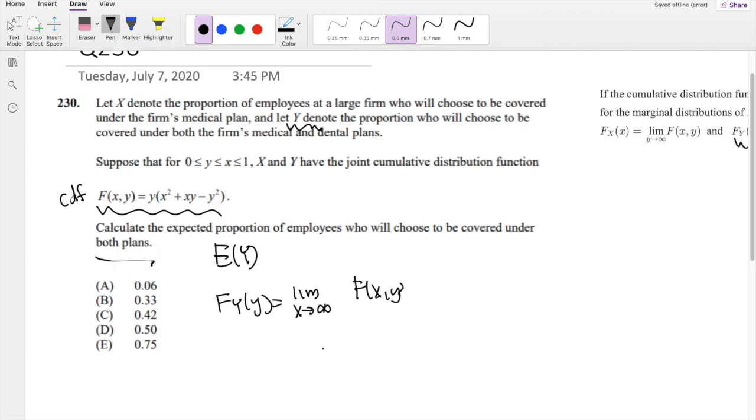So the limit, what does X approach? Well, we know that X is bounded by 1. So we know that this is basically F(1, Y), which is given by Y(1 + Y - Y²), which we also know to be Y + Y² - Y³.